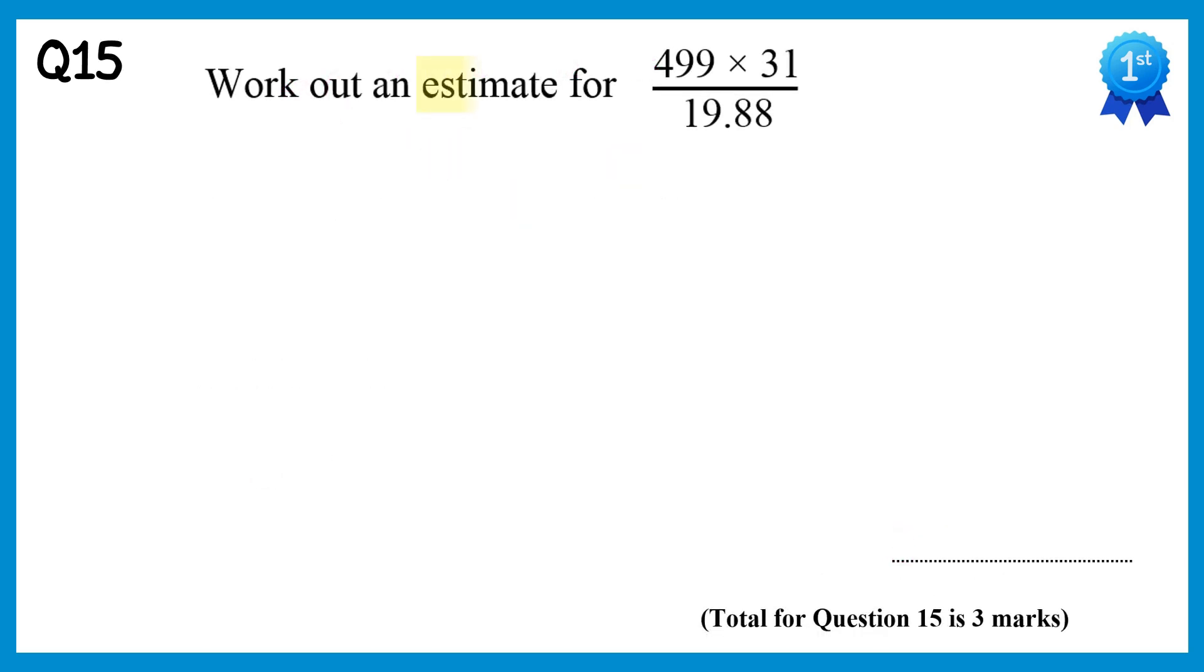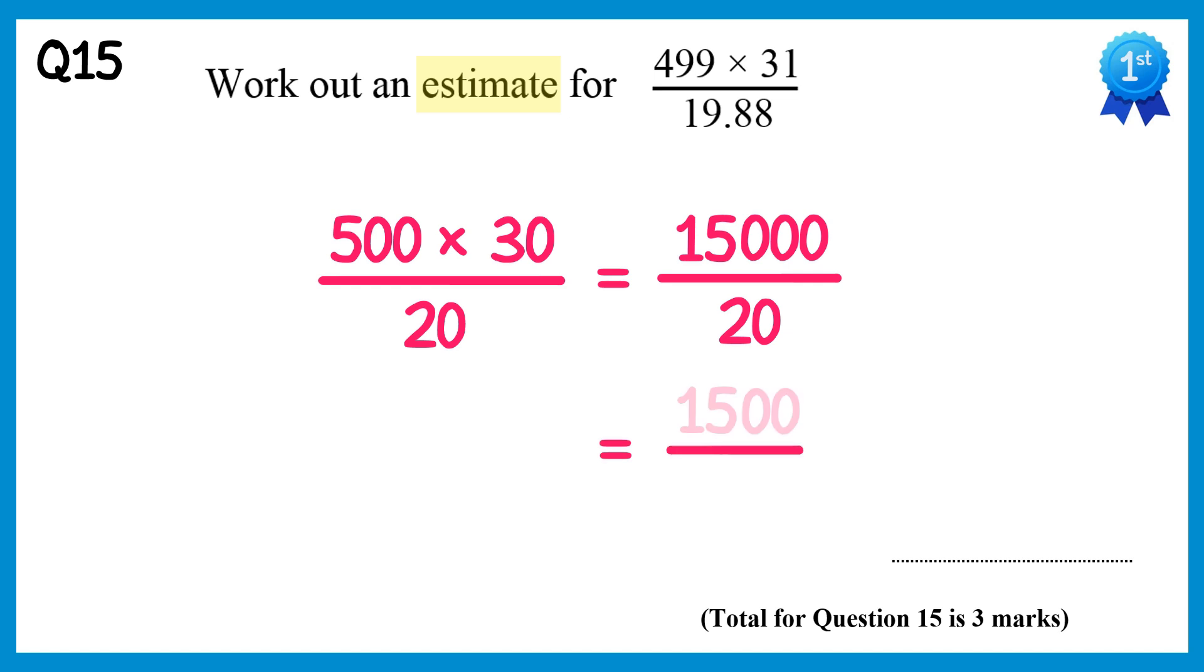In the question we're asked to estimate, so we'll round all of the numbers to one significant figure. Starting on the top, 499 would round to 500, 31 would round to 30, and on the bottom 19.88 would round to 20. We can then calculate this. On the top 5 times 3 is 15, and there's 3 zeros, and on the bottom we have 20. If we divide by 10 on top and bottom, we get 1500 over 2, and this means 1500 divided by 2, which is 750.